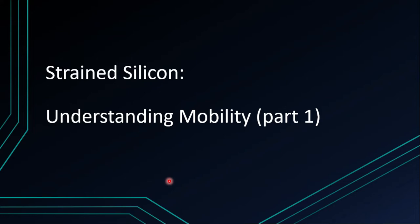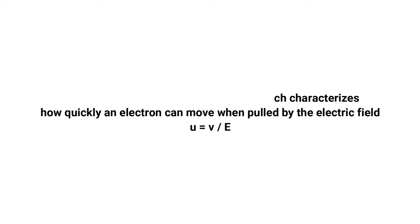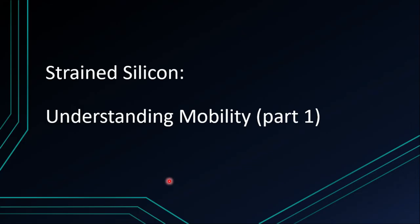Firstly, we are going to discuss understanding of mobility in this part 1, and in part 2 we will see mobility enhancement. Mobility of an electron is a parameter that characterizes how quickly an electron can move when pulled by an electric field. That's why mobility equals the velocity divided by the electric field, which means it's the velocity of the electron or hole or any charge carrier per electric field.